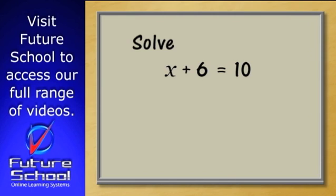X plus 6 is on the left side. What we need to do is get rid of the plus 6. What should we do?